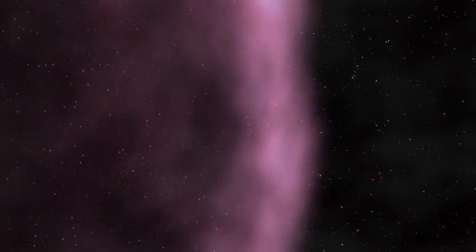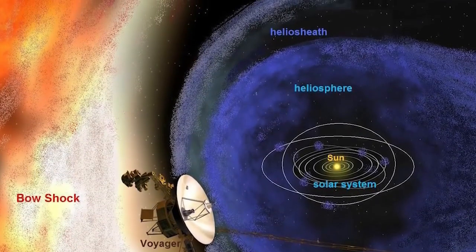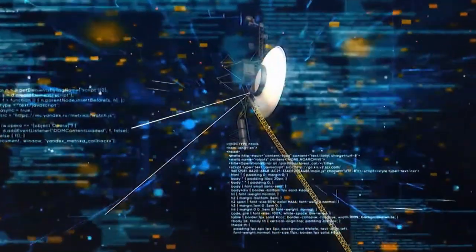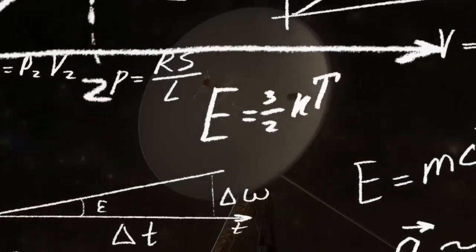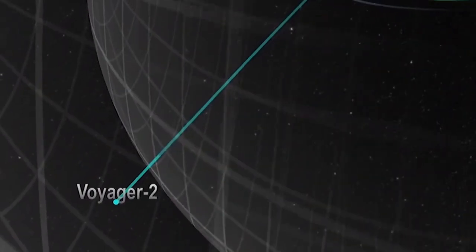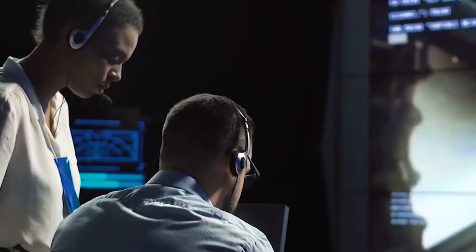Voyager 2's entry into interstellar space added another layer to this cosmic puzzle. While Voyager 1's data helped establish the characteristics of the outer boundary of the heliosphere, Voyager 2's observations provide additional context and detail.